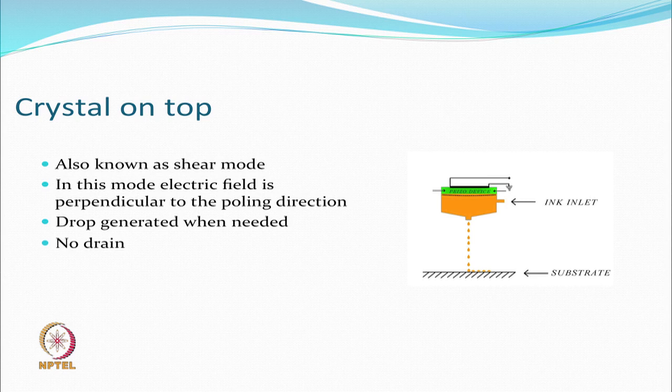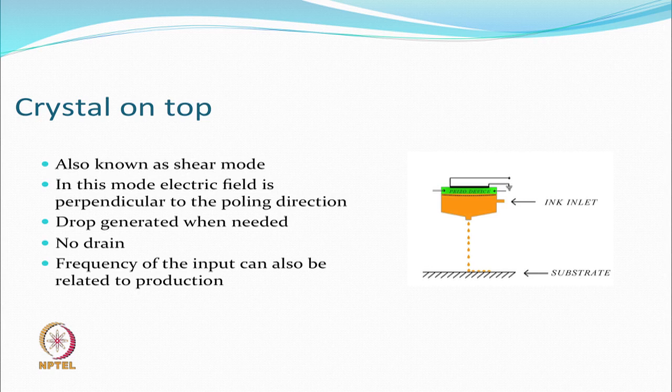Since drops are generated only when needed, there is no drain required, which means the system can theoretically be smaller in size. The frequency of the input can be varied, and this frequency is directly related to production — specifically, how many drops have been produced per unit time. The frequency at which the system operates will ultimately determine the operation speed.